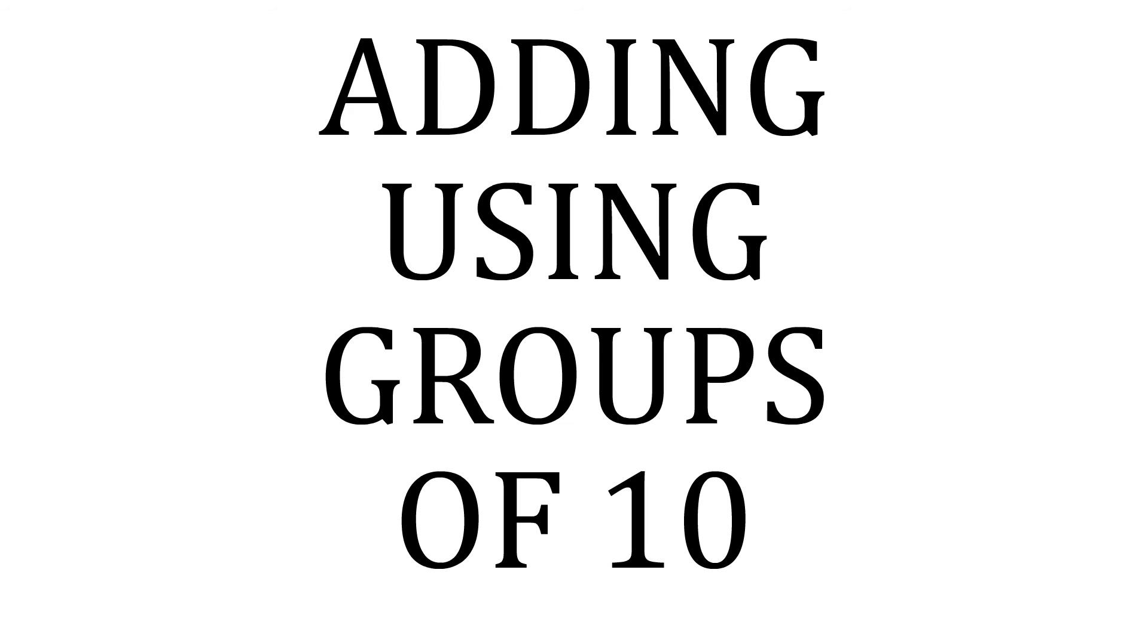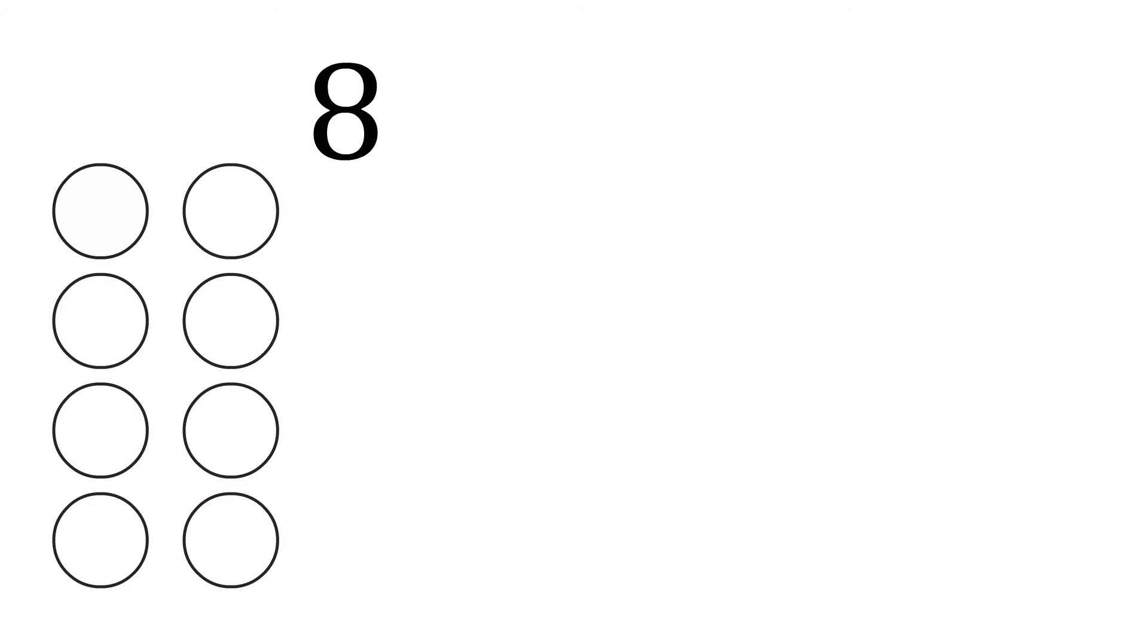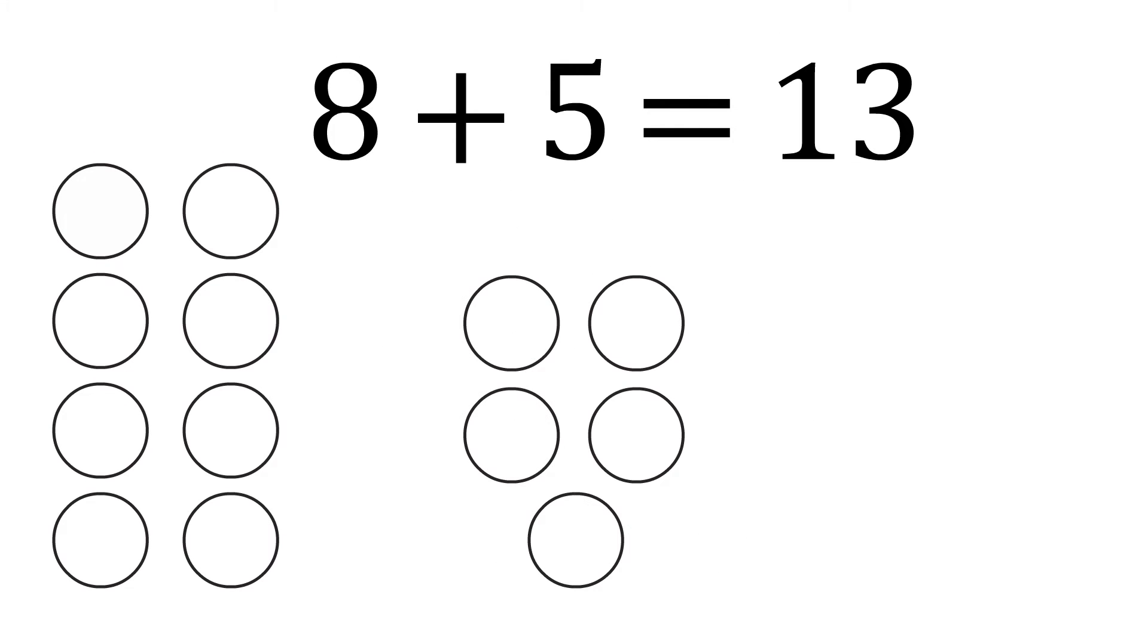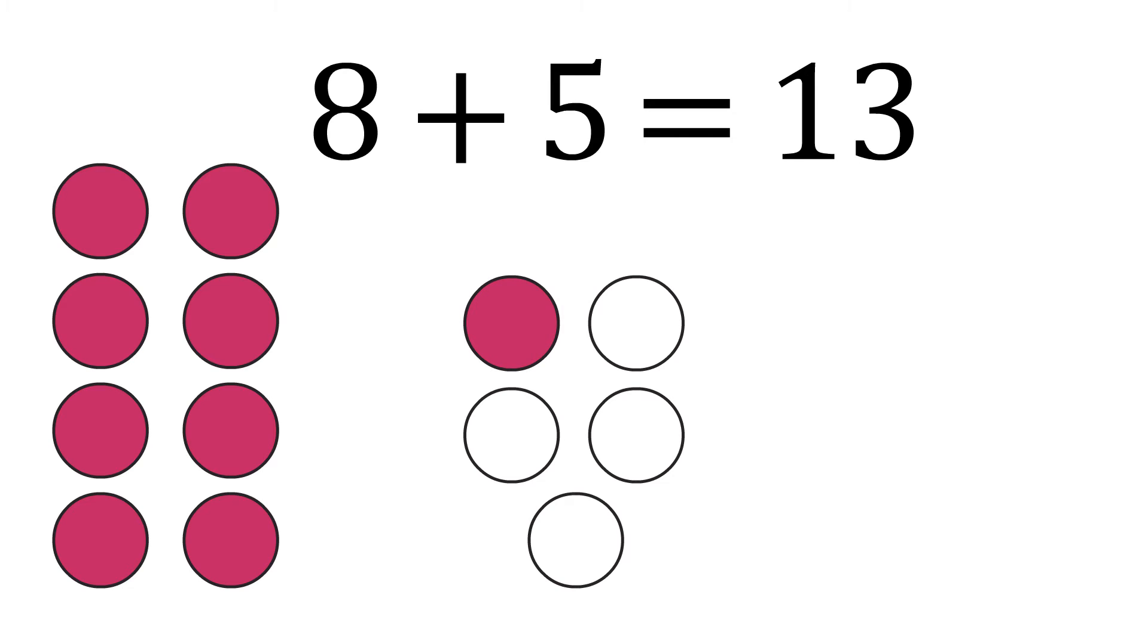Sometimes you can add by making a group of ten. For example, eight plus five equals thirteen: one, two, three, four, five, six, seven, eight, nine, ten, eleven, twelve, thirteen. Here's another way to add eight plus five. Eight plus two equals ten. And ten plus three more makes thirteen.